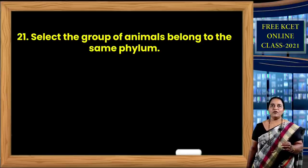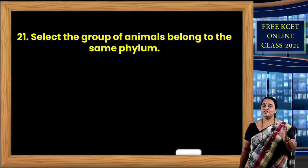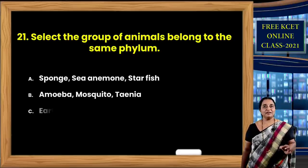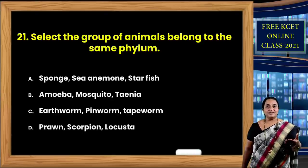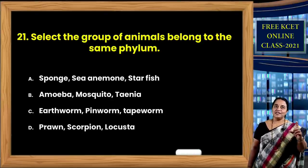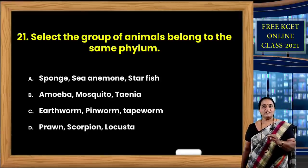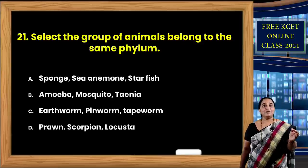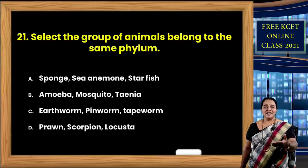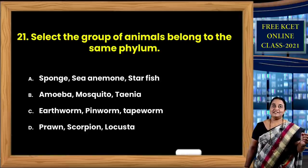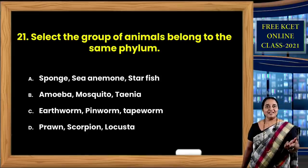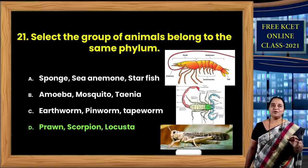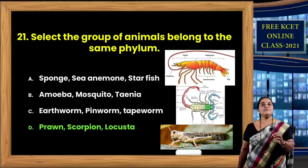Question 21: Select the group of animals belonging to the same phylum. Students, make a list of all animals given as examples for each phylum. Option A: sponge, sea anemone, starfish — they don't match as starfish belongs to Echinodermata, sponge to Porifera. Option B: Amoeba (Protista), mosquito (Arthropoda), Taenia (tapeworm) — definitely a mismatch. Option C: earthworm (Annelida), pinworm (Aschelminthes), tapeworm (Platyhelminthes) — wrong. Correct option is D: prawn, scorpion, and Locusta — all belong to phylum Arthropoda.